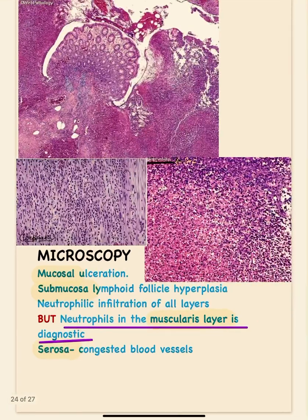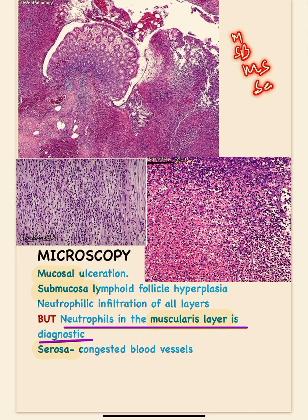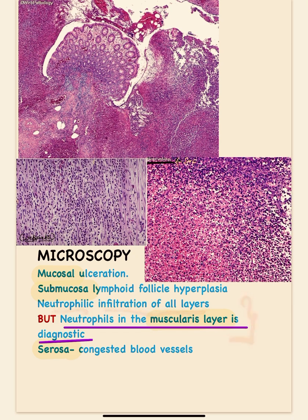In microscopy, there is mucosal ulceration from the increased intraluminal pressure. The appendix has four layers: mucosa, submucosa, muscle layer, and serosa. Inflammation composed of neutrophils will be seen in all layers. However, the neutrophilic infiltration of the muscularis propria — the muscle layer — is diagnostic and pathognomonic for acute appendicitis.